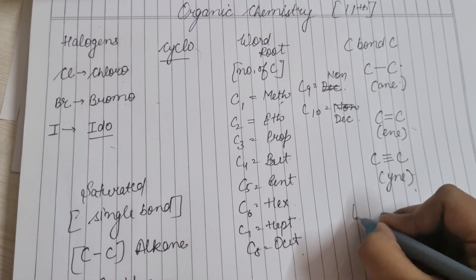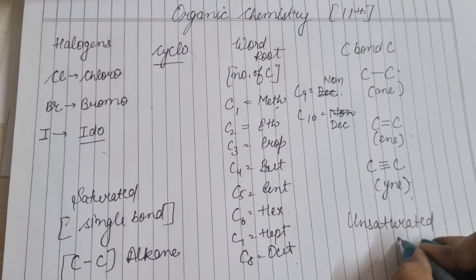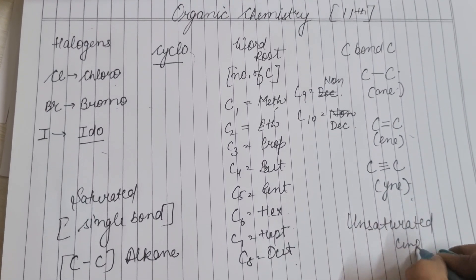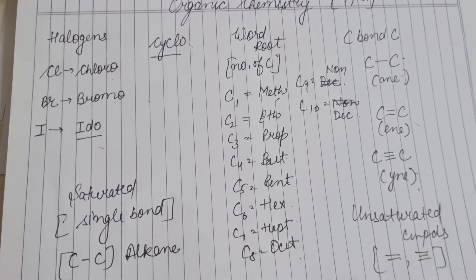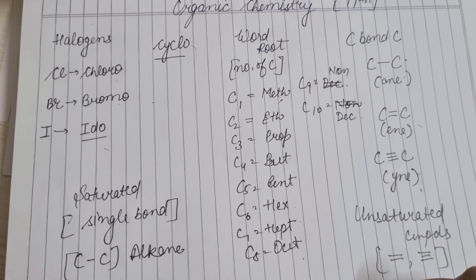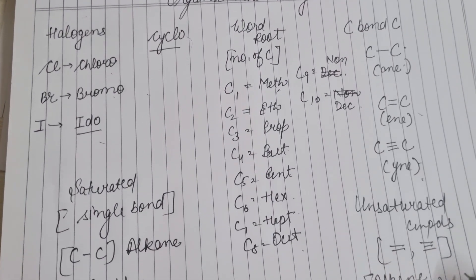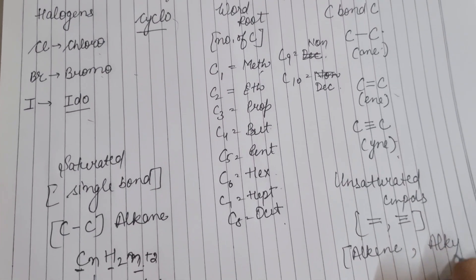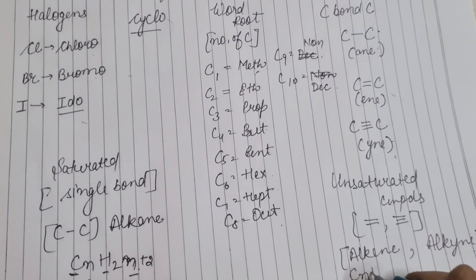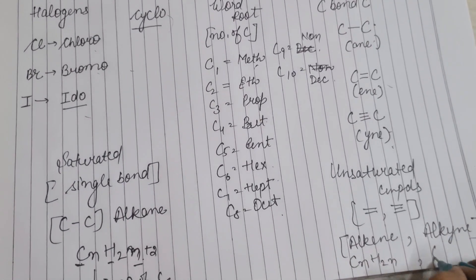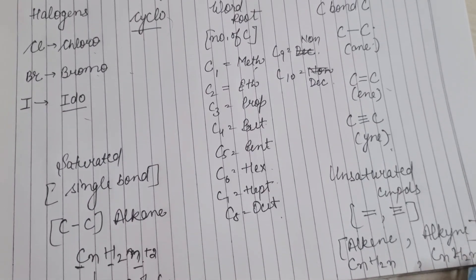Unsaturated compounds वो होते हैं जिनमें double bond और triple bond वाले आते हैं। इनमें alkene (double bond) और alkyne (triple bond) पढ़ना होता है। Alkene का formula CnH(2n) और alkyne का formula CnH(2n-2) होता है।